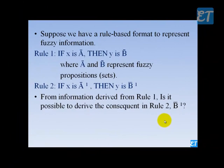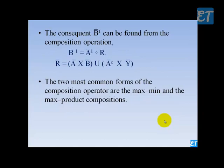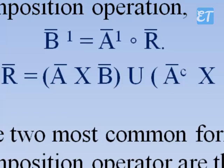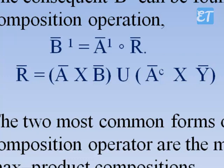The question is: can we find B1 with the help of the information obtained from Rule 1? The consequent B1 can be found from the composition operation. R is the information — the intelligence we obtain from Rule 1.